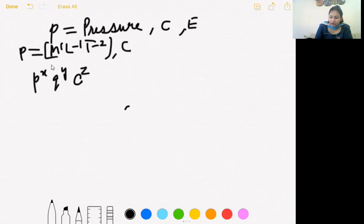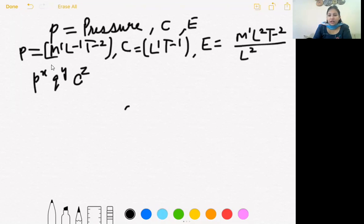Speed of light ki dimension hai L1 T-1 same as that of speed. And energy ki E ki dimension hai energy M1 L2 T-2 per unit area jiski dimension hai L2 per unit time jiski dimension hai T1. So after solving you get E ki dimension hai M1 T minus 3.